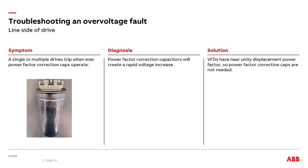Another line-side cause involves power factor correction capacitors still installed in a facility that now has VFDs. Previously, across-the-line motors created lagging power factor, and customers installed PF correction caps to bring power factor back to unity. These caps can create oscillations on the drive's DC bus — similar to the passive harmonic filter issue — or create power spikes that trip the drive on overvoltage. The key benefit of a VFD is that it already produces near-unity displacement power factor (approximately 0.98) across its entire speed range. The solution: remove the power factor correction caps entirely — they are not needed when variable frequency drives are installed.